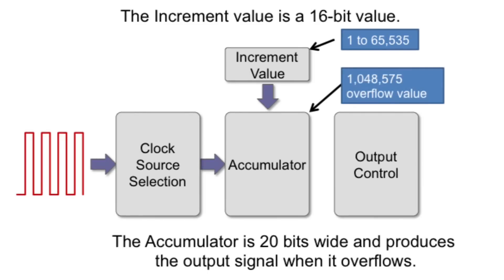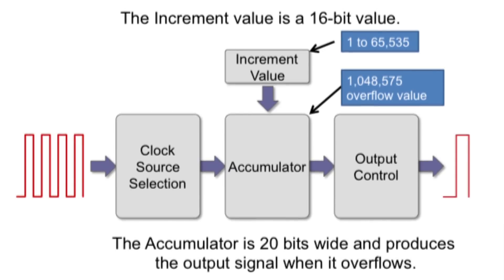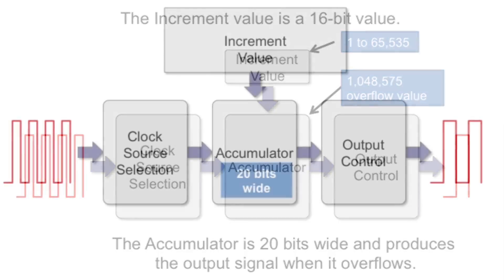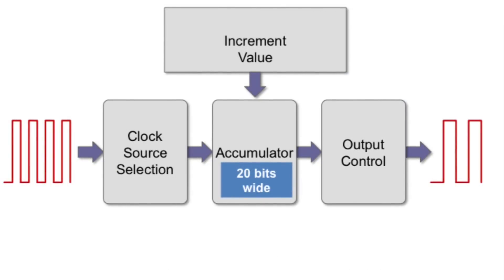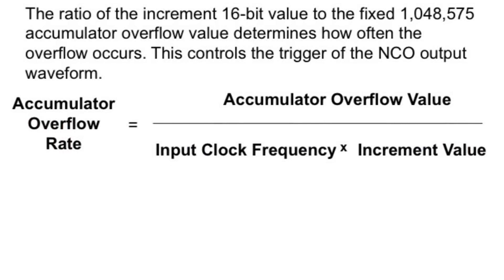The accumulator is a 20-bit wide value that overflows when its contents exceed 1,048,575 counts. The overflow of the accumulator triggers changing the state of the NCO output signal. The accumulator is made up of three byte-sized registers: the NCO accumulator low byte, the NCO accumulator high byte, and the NCO accumulator upper byte. All three registers have read and write access from software, so you can preload a value in the accumulator to preset the overflow point. The ratio of the increment 16-bit value to a fixed 1,048,575 accumulator overflow value determines how often the overflow occurs, controlling the trigger of the NCO output waveform.